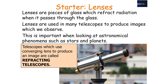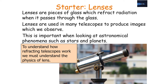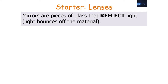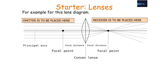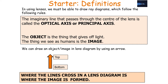Refracting telescopes build on concepts from GCSE physics — lenses are pieces of glass which refract radiation when it passes through them. To understand how refracting telescopes work we need to understand the physics of the lens. In our lens diagram, the emitter of radiation is placed on the left-hand side and the receiver on the right-hand side with the lens in the middle. There is an imaginary line through the centre of the lens called the optical axis or principal axis.